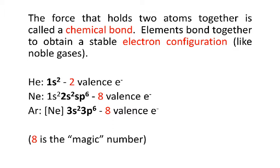Neon, on the other hand, has 1s2, 2s2, and 2p6 — not sp6, sorry about that, there's a typo — which gives eight valence electrons. Remember, all the valence electrons are in the s's and p's. Argon looks just like neon, then 3s2 and 3p6, with eight valence electrons. So that makes eight your magic number.